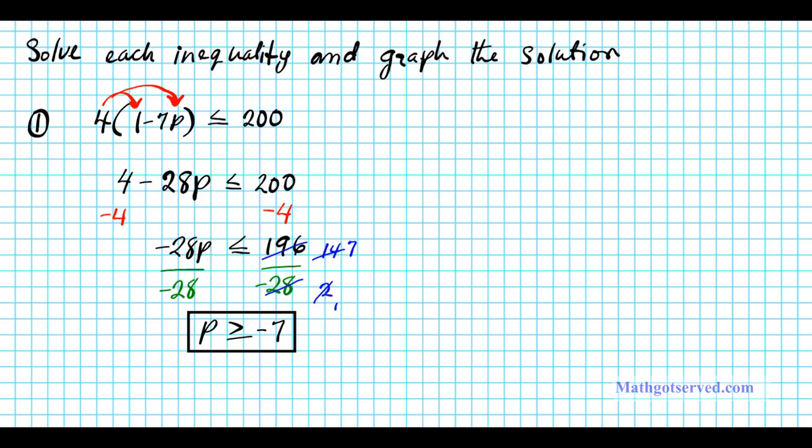Alright so this right here is your solution. Are we done with the problem? The answer is no we're asked to graph. Alright so let's go ahead and graph this linear inequality. This linear inequality is negative 7 and everything greater than it. So let's say this is 0 and then we have 1 2 3 4 5 6 7.